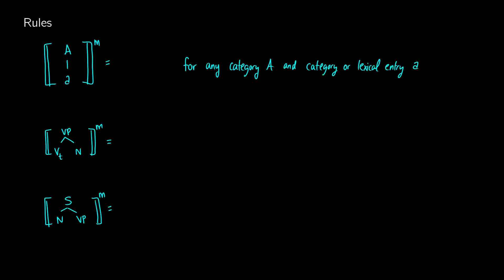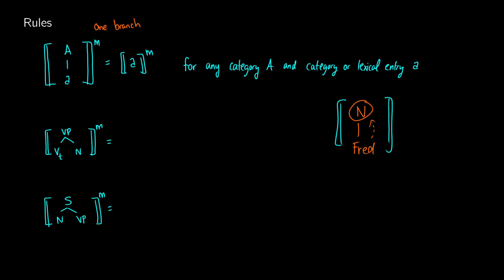The first rule is a general rule for any node that has just one branch coming out of it. If we have a single branch — for example, N going to Fred — to get the meaning of N, we just assign it the same meaning as Fred. We write this as: if A goes to a, the meaning of A is just the same as a itself. So big A gets the same meaning as little a if little a is coming out of big A. This works for anything with just one branch — you can think of it as a pass-up rule.